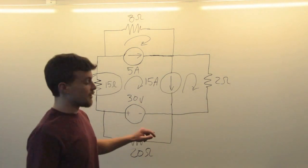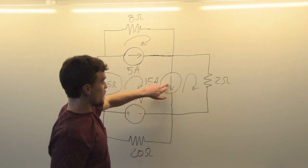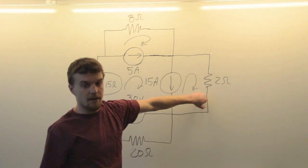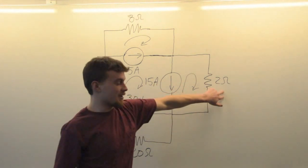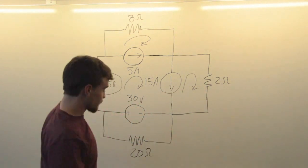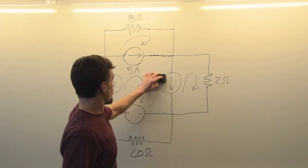First of all, you see in between these two points the only thing that exists is a current source in parallel with a resistor. If we take this current source and put it out here and move the resistor in here, it's equivalent, same thing, and that'll make our job a lot easier.